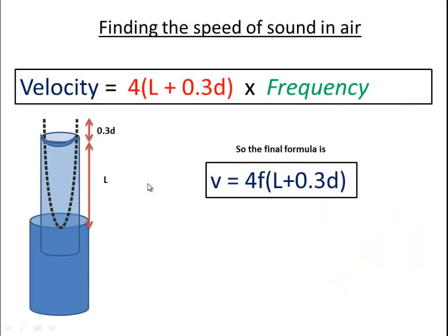And that gives us a new equation, which is V equals 4F, four times the frequency, L, the length of the air column, plus 0.3 times the diameter of the pipe. And that is the formula we get for the velocity here. Velocity is the speed of sound in air.